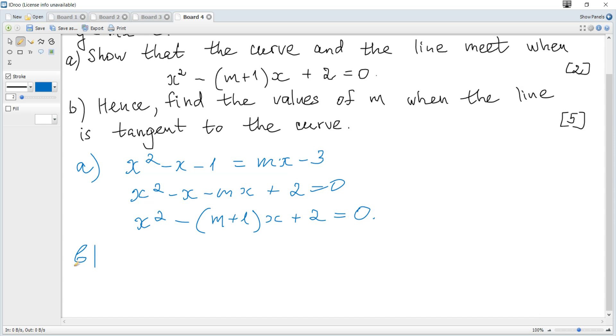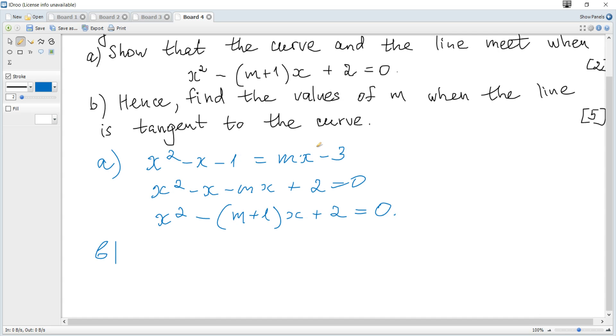Question b: hence find the values of m when the line is tangent to the curve. Tangent means what? That there is only one point of intersection, a line just touches the curve.